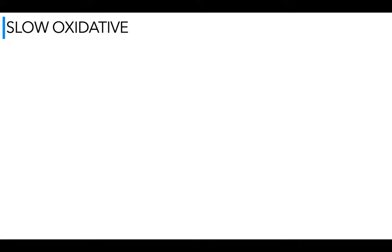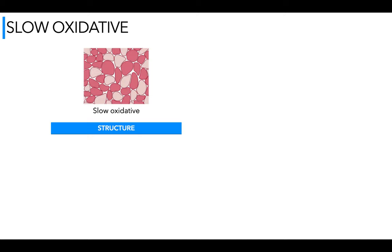Slow oxidative to start us off. Very common in the Cambridge exam questions at AS level — you'll either be asked to give two structural characteristics of fibers, or two functional characteristics, or you might be asked to list five characteristics, taking up to three from one list and two from another. So the first structural characteristic: fiber color is red. This is because they have a good blood supply, oxygen going into the muscle. They're used within the aerobic energy system, so they need oxygen.